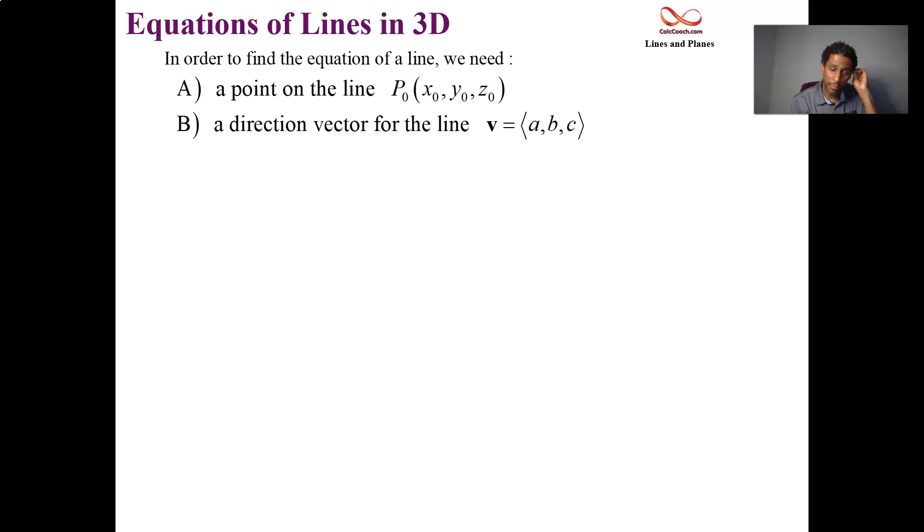So I'm generically calling my point on the line P sub 0 or P0. So it has generic coordinates x0, y0, z0. And the direction vector for the line is going to be generically with the components a, b, and c. All right, so let's go ahead and put our framework in 3D. There's our point that's on the line, P0. There's our direction vector for the line, v. And so I'm going to draw in then the line that goes through P0 and has the same direction as v. It goes on forever in all directions.